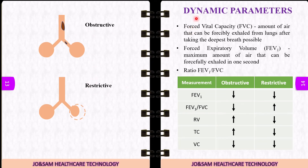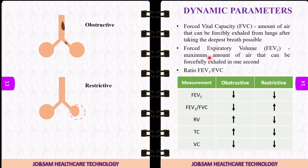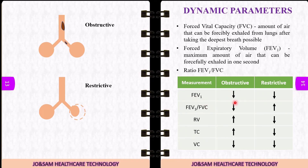To distinguish obstructive and restrictive disease, we use forced vital capacity (FVC) and forced expiratory volume (FEV1). FVC is the amount of air that can be forcefully exhaled after taking the deepest breath possible. FEV1 is the maximum amount of air forcefully exhaled in one second. The ratio FEV1/FVC less than 70% indicates airway obstruction, while 85% indicates a restrictive effect.